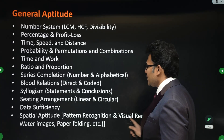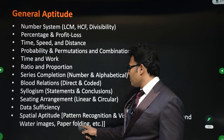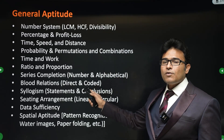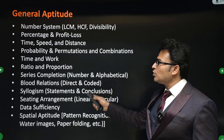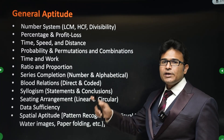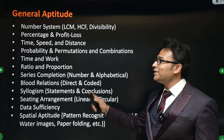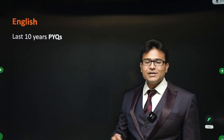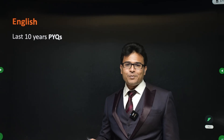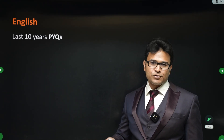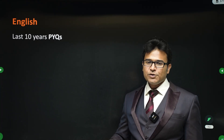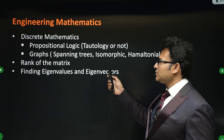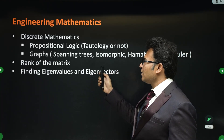Visual reasoning topics like mirrors and water images and paper folding are the most important for aptitude. Out of 40, focus on these 11 and you will get marks. For English, there are no specific important topics — just go through all the previous year questions (PYQs) as many as possible, and learning from them will help you.